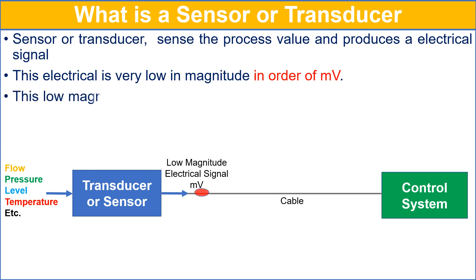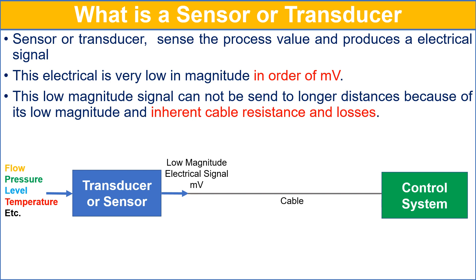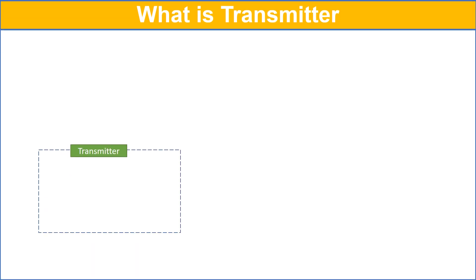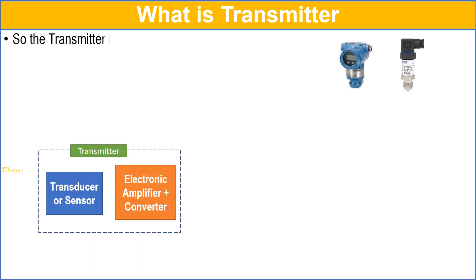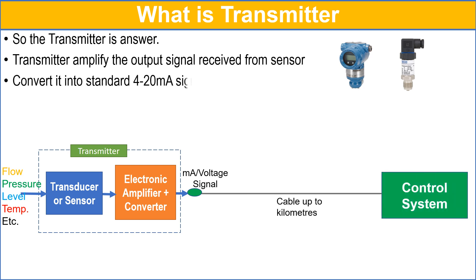This low magnitude signal cannot be sent over a longer distance because of its low magnitude and inherent cable resistance and losses. The transmitter is the answer to this problem.